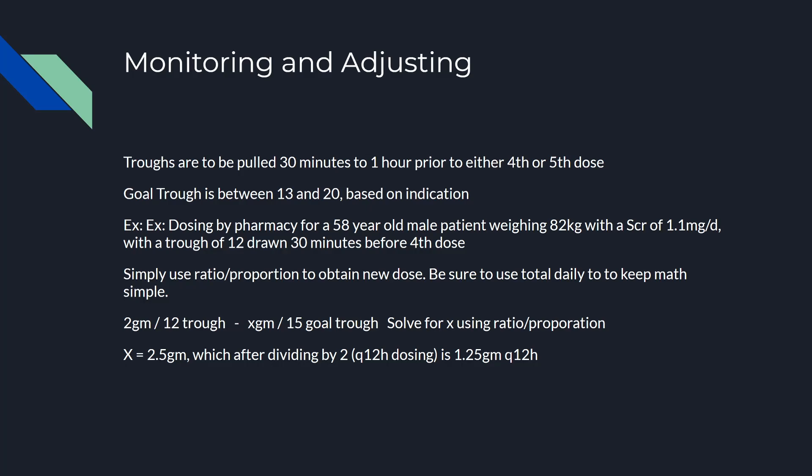That should get us up to that trough of 15. If the patient's kidney function was getting worse, you'd probably just leave the dose alone. If they came in and got hydrated with normal saline and kidney function improved, you'd want to adjust. Vancomycin dosing can get a little complicated, but once you do it a handful of times, you'll remember. Don't panic if you get a high trough in the 25s — just push off the next dose, do your ratio proportion, get the new dose, maybe skip one dose, then put in a new trough before the fourth or fifth dose of the new schedule.